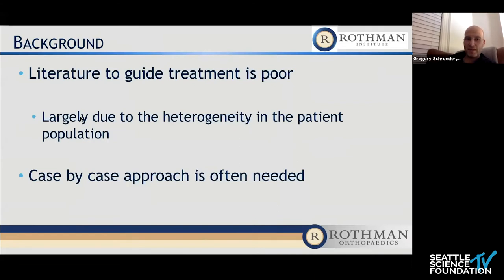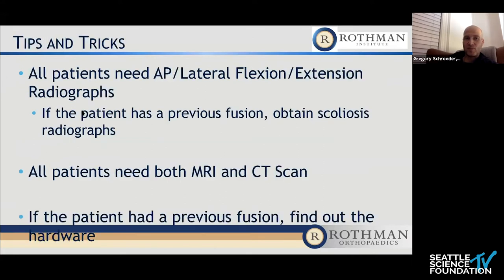Because of that, a case-by-case approach is often needed, and we're going to go through four cases that were all treated very differently. When I think about revision lumbar surgery, I try to go through an algorithm. All patients need AP lateral flexion-extension radiographs. If the patient had a previous fusion, even just an L4-5 fusion, I usually obtain scoliosis radiographs so I can have a full understanding of what's going on with their sagittal balance. Both MRIs and CT scans are really important.